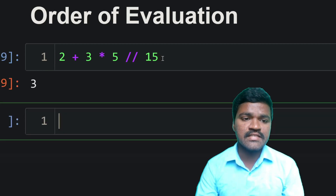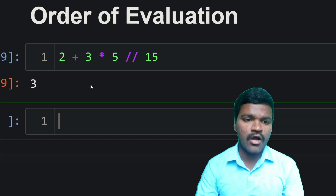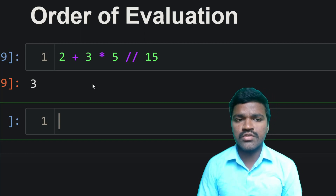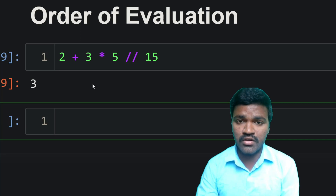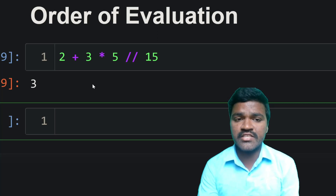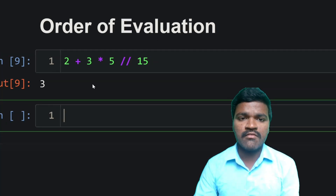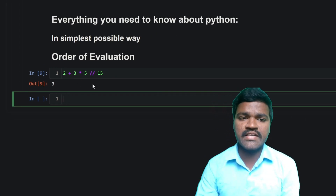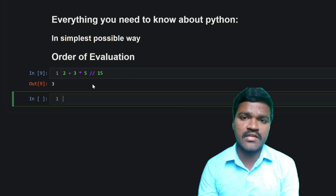The answer for this is 3. You need to know and understand that we have some rules while evaluating the order of any kind of expression. Welcome to the series of everything you need to know about Python in the simplest possible way. In this video, we will discuss the order of evaluation of expressions in Python.